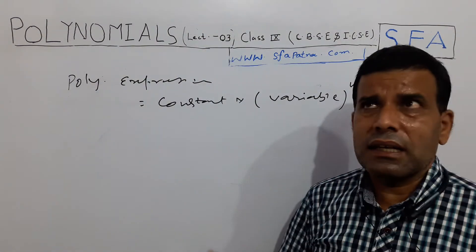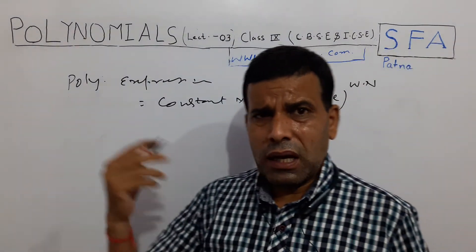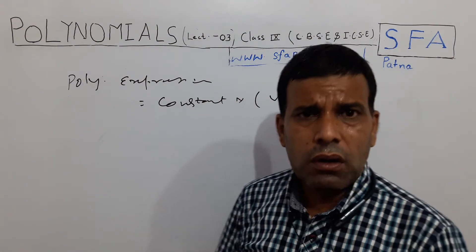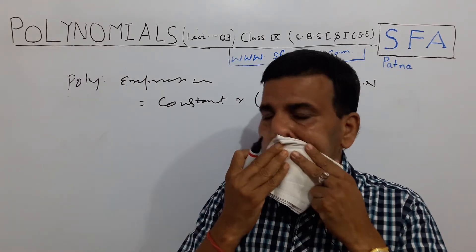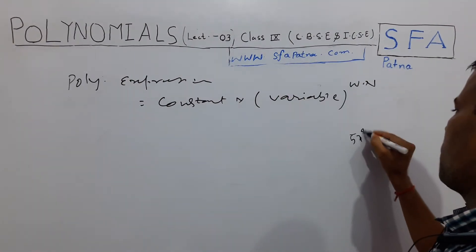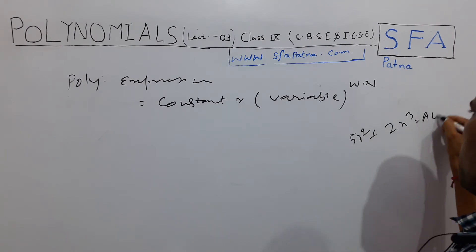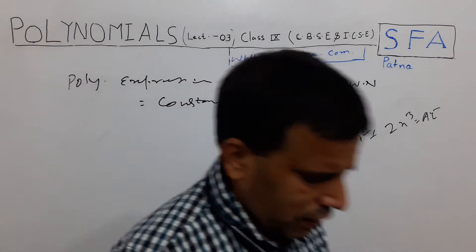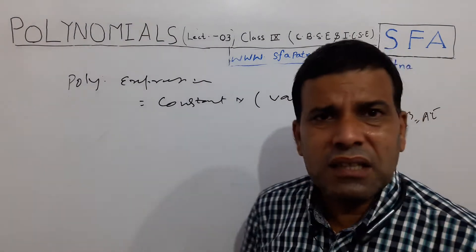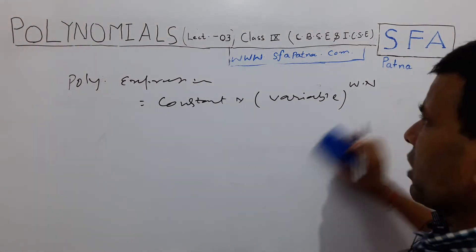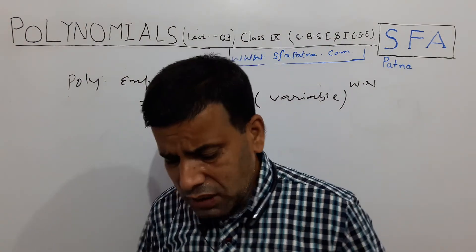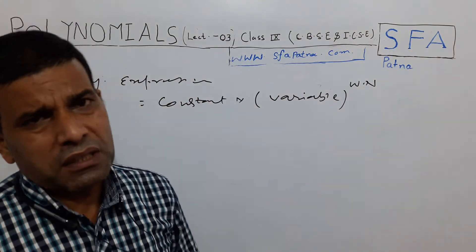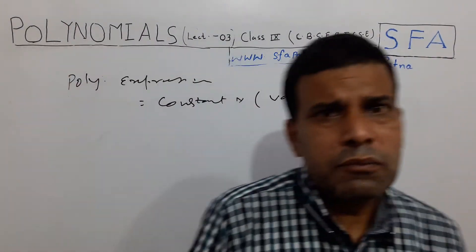In a rational algebraic expression, we perform mathematical operations on algebraic expressions — such as addition, subtraction, multiplication, and division. For example, 5x² + 2x³ is an algebraic expression. Similarly, when we perform mathematical operations on polynomial expressions, let us see what the result is.